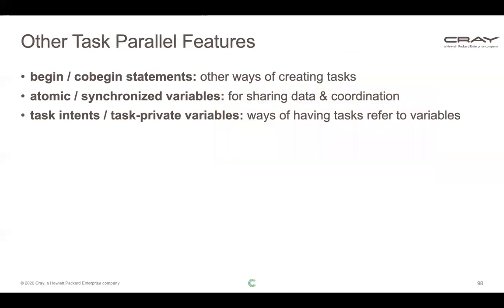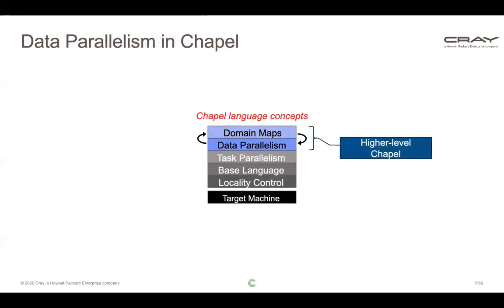There are a few other task parallel features beyond what you've seen. There are a couple of other ways to create tasks — 'begin' and 'cobegin'. Tasks can share data or synchronize through atomic variables or synchronized variables. We also have task intents or task-private variables, which are ways of having tasks refer to variables safely without stomping on each other's feet. That's essentially it for task parallel features — a small but very powerful subset of the language.